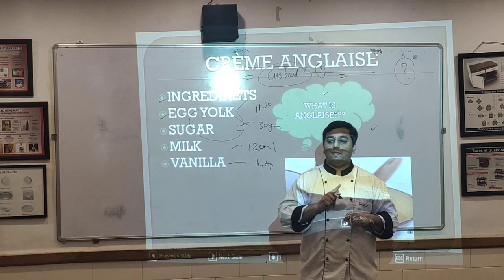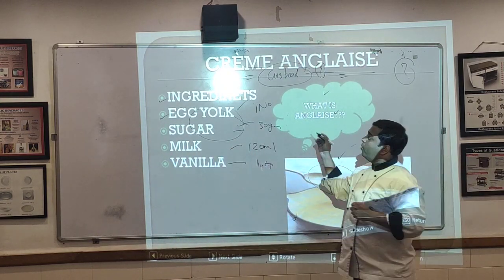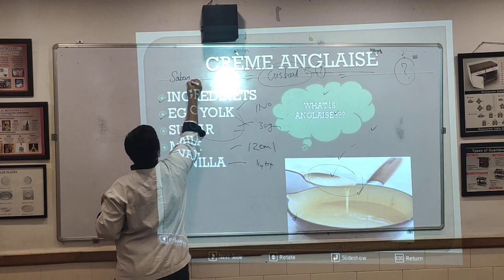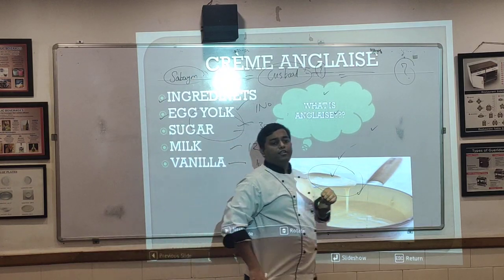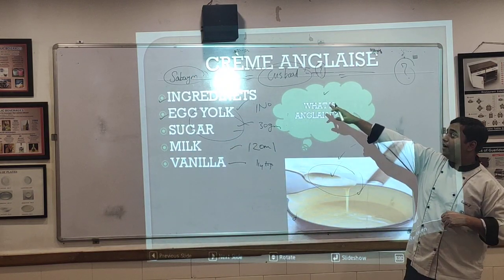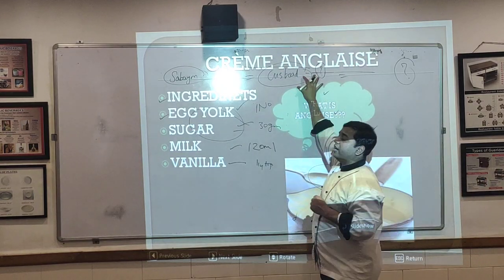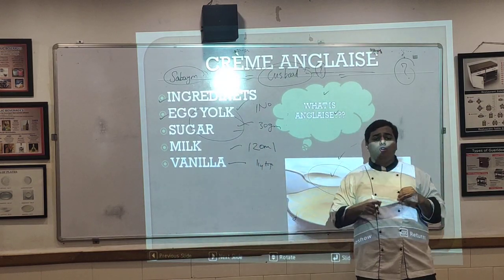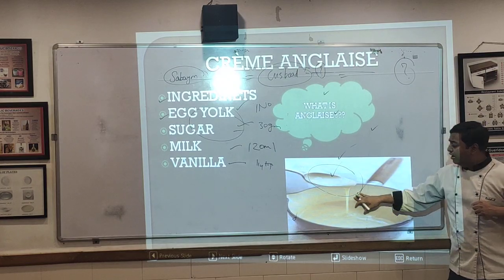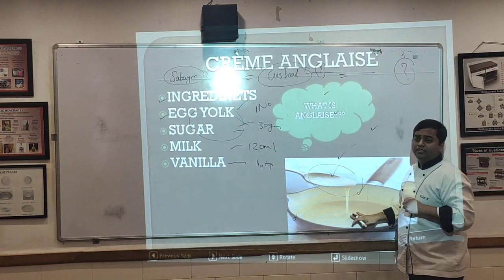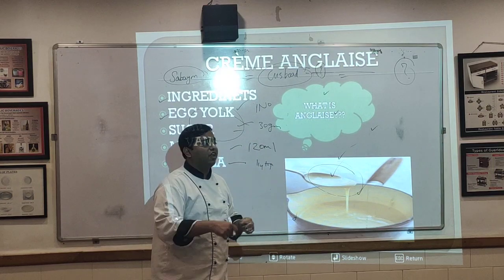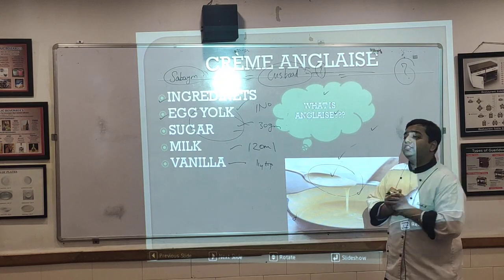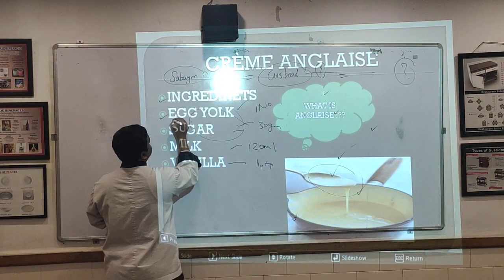Do not use a whisk for Crème Anglaise — use a wooden spoon. We are not making a sabayon here. Sabayon involves aeration, but Crème Anglaise is a thick custard and you do not want aeration. Use a wooden spoon to stir continuously. Stop when the spoon coats the back — that is your indication. The thickening agent in Crème Anglaise is the egg yolk alone.